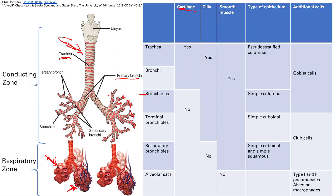Looking at the structural chart — cartilage goes all the way up through the bronchi, not into the bronchioles. Cilia go farther, all the way to the terminal bronchioles. Smooth muscle goes even further, all the way to the respiratory bronchioles — just not in the alveolar sacs. Smooth muscle controls dilation and constriction of the airways, regulating airflow. A helpful mnemonic: cartilage, cilia, smooth muscle — each goes one step further in alphabetical order.